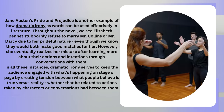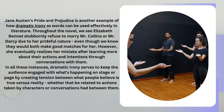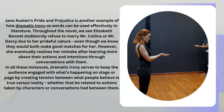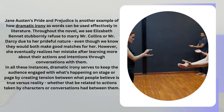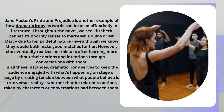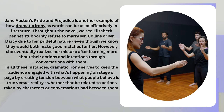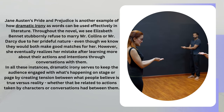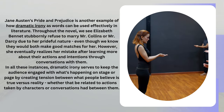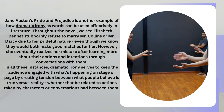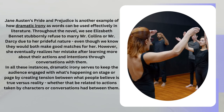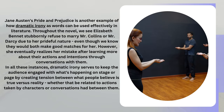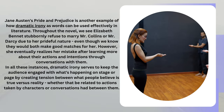Jane Austen's Pride and Prejudice is another example of how dramatic irony can be used effectively in literature. Throughout the novel, we see Elizabeth Bennet stubbornly refuse to marry Mr. Collins or Mr. Darcy due to her prideful nature, even though we know they would both make good matches for her. She eventually realizes her mistake after learning more about their actions and intentions. In all these instances, dramatic irony keeps the audience engaged by creating tension between what people believe is true versus reality.